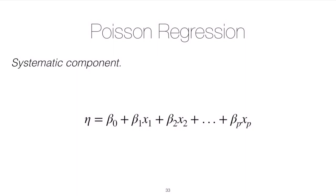As with binomial regression, we cannot simply use an estimate of η to directly predict μi, because there is no reason why η will be positive — which is required of rates. Our counts need to be positive, but a linear combination of measured predictors is not constrained to be positive. So we need a link function that ensures our prediction is positive.